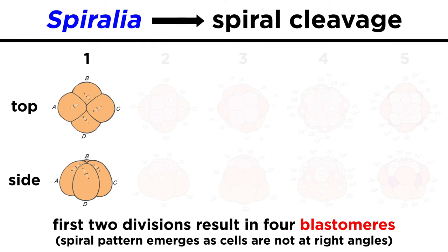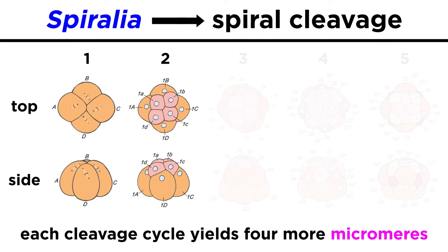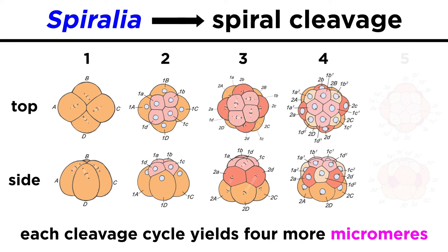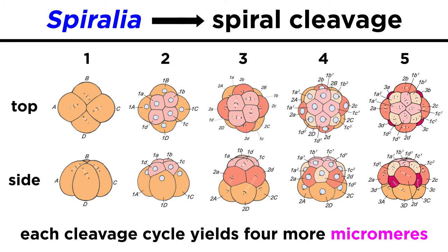Note that the spiral pattern is already forming, since the cells do not align at right angles with one another. With each subsequent cleavage cycle, the resulting blastomeres give rise to an additional four cells, or micromeres, that are rotated relative to their parent, resulting in alternating symmetry and the characteristic spiral pattern.